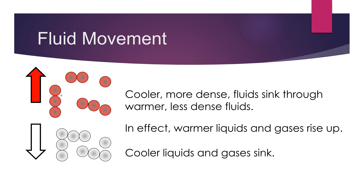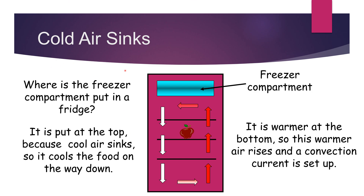You can understand this by this diagram. You can see these are warmer gas or liquid — it will rise up. And these are cooler liquids or gases — it will sink down. Cool air sinks. Where is the freezer compartment put in the fridge? It is put at the top because cool air sinks, so it cools the food on the way down. The warmer air at the bottom rises, and a convection current is set up. This process is called a convection current.